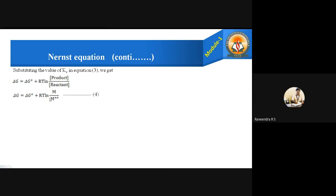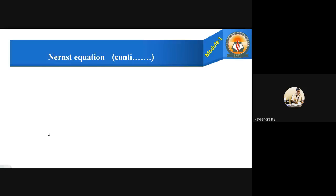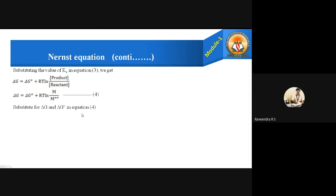So ΔG equals ΔG° plus RT ln [M] / [M^(N+)], which is equation number four. Here, M is the product and M^(N+) is the reactant from the redox equation. We now substitute the values of ΔG (which is minus NFE) and ΔG° (which is minus NFE°) into equation four.